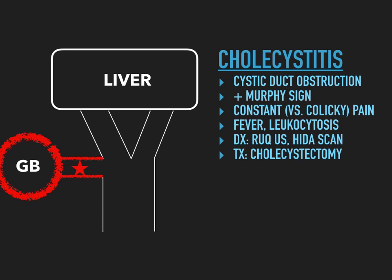In cholecystitis, the cystic duct and gallbladder are inflamed. The patient will have a Murphy sign, which is high yield. The patient takes a deep breath in and the physician pushes fingers and adds pressure around the edge of the liver. The liver and gallbladder drop down onto the physician's hands, and because the cystic duct and gallbladder are so inflamed, it hurts. If there's pain when the patient inhales and the physician is adding pressure in the right upper quadrant, that's a positive Murphy sign — pathognomonic for cholecystitis.